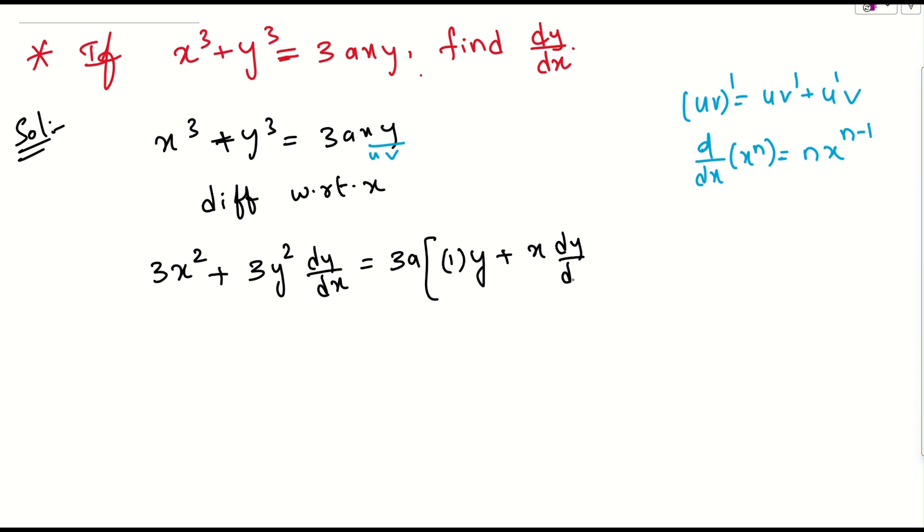So this is nothing but $3x^2 + 3y^2 \cdot dy/dx = 3a(y + x \cdot dy/dx)$, which equals $3ay + 3ax \cdot dy/dx$.